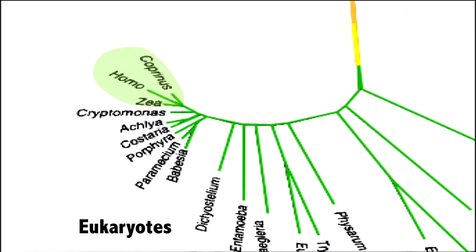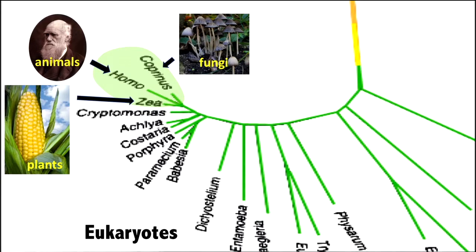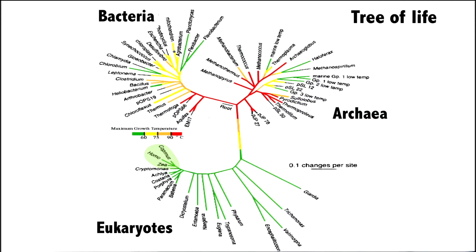Let's blow up that group and illustrate them with pictures. Zea — corn — represents all plants; Homo, represented by Charles Darwin, represents all animals; and Caprinus is a mushroom representing all fungi. Now let's back up and see how long it took to go from the tip of the red arrow to the tip of the blue arrow — about a billion years of animal evolution. A lot can happen in a billion years.